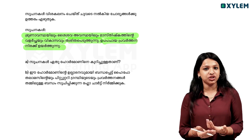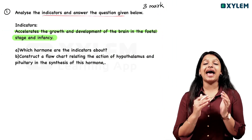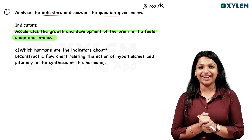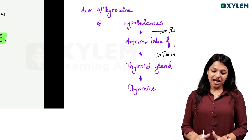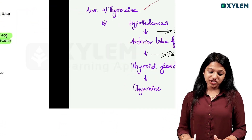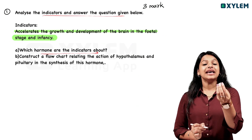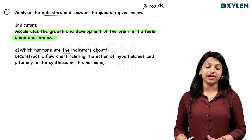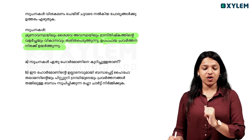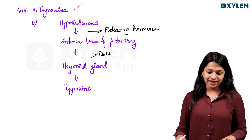It increases metabolism rate and accelerates growth and development. If you think about which hormone is indicated by this — we call it thyroxine. The hormone indicated here is the thyroid hormone: thyroxine.